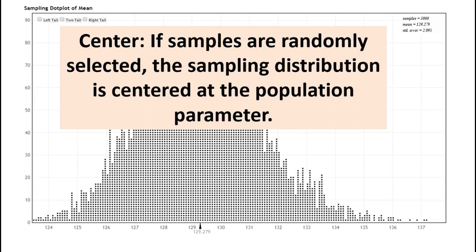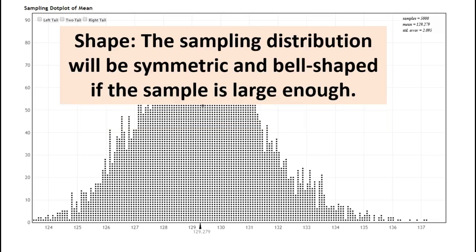At the center or mean of the distribution is the value of the parameter. This is the same as saying that if we calculate the mean of all the statistics, it will equal the parameter. The plot has a symmetric bell shape under certain conditions, and the standard deviation of the distribution is equal to the standard error.